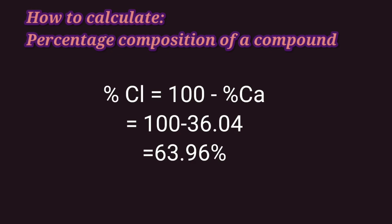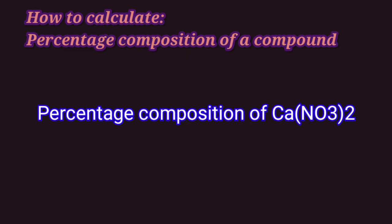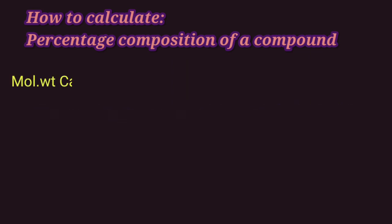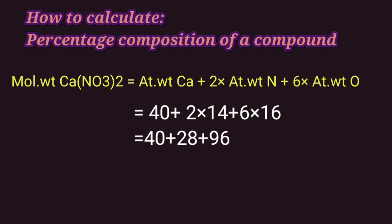Next and last compound for percentage composition is calcium nitrate. We will first find molecular weight of calcium nitrate: it is equal to atomic weight of calcium plus 2 into atomic weight of nitrogen plus 6 into atomic weight of oxygen, since calcium nitrate has 2 nitrogen atoms and 6 oxygen atoms. So we have 40 plus 2 into 14 plus 6 into 16, that gives us 40 plus 28 plus 96, which on addition gives us 164. So molecular weight of calcium nitrate is 164.